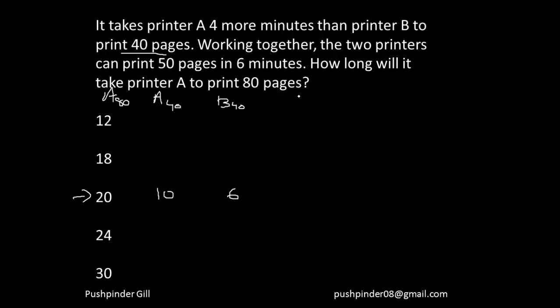Now let's calculate how many minutes A and B together are going to take to print 40 pages. If A takes 10 minutes and B takes 6 minutes to print the same number of pages, together they are going to take 10 times 6, that is 60, divided by 10 plus 6, that is 16. There is a condition given in the question - working together, the two printers can print 50 pages in 6 minutes. So if I calculate how many minutes they are going to take together to print 50 pages, this should come as 6 minutes.